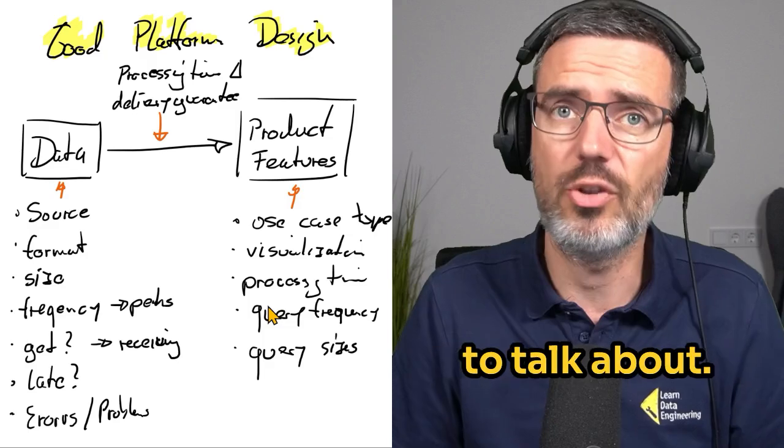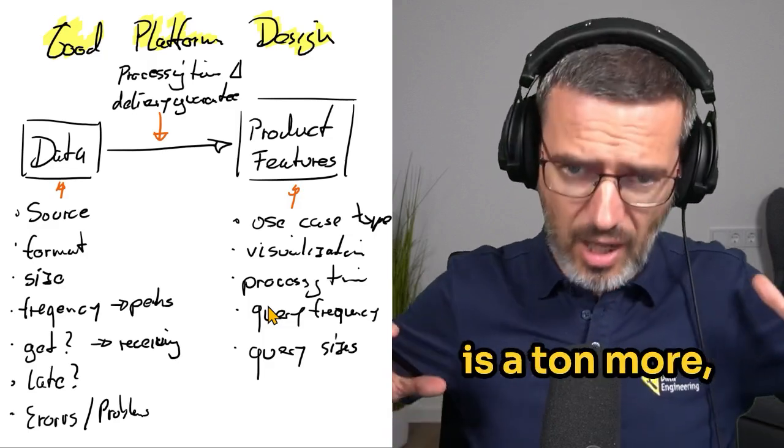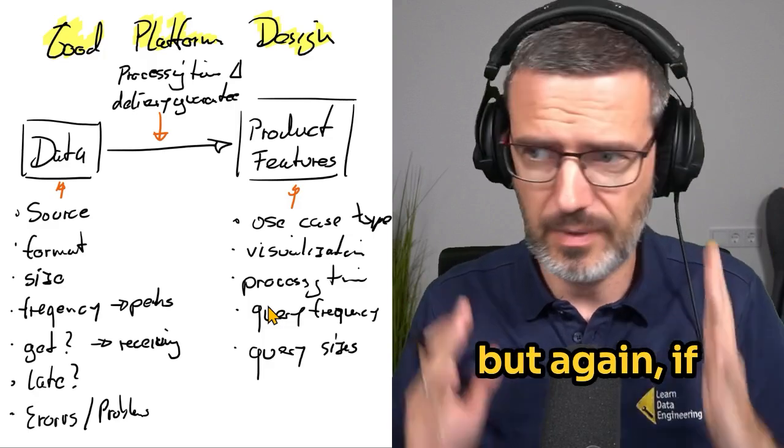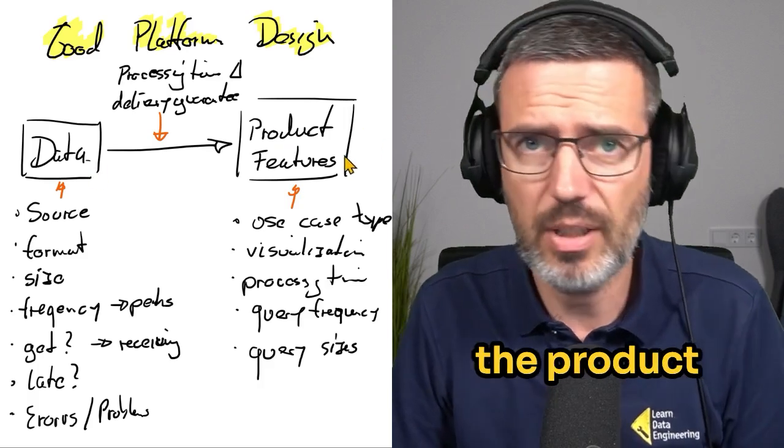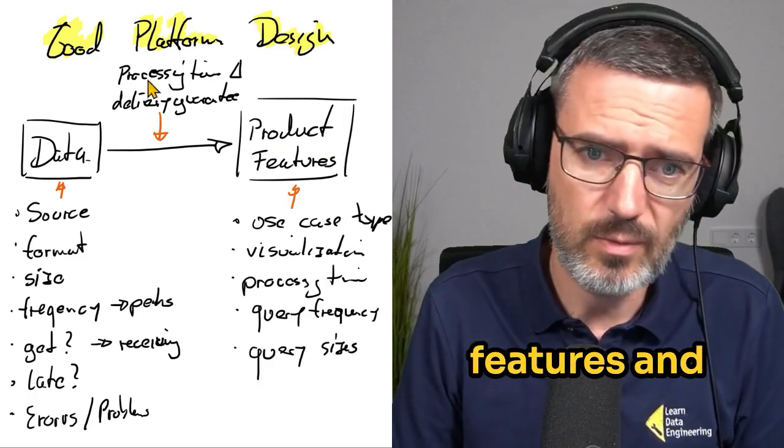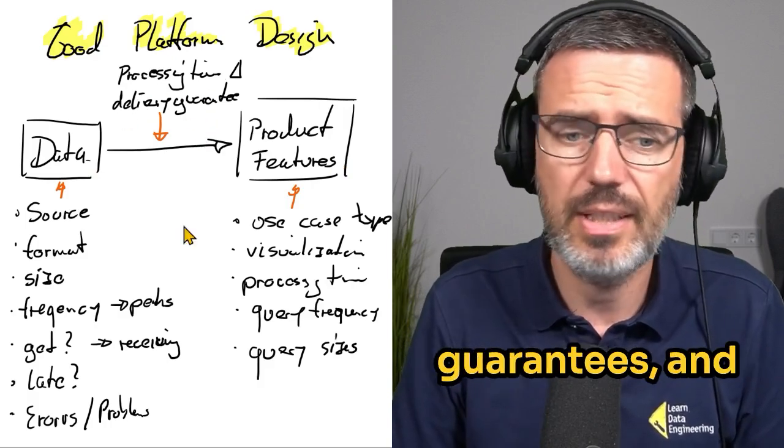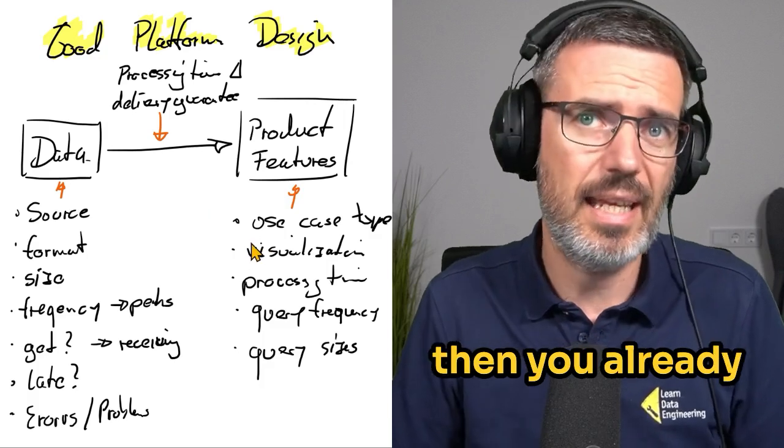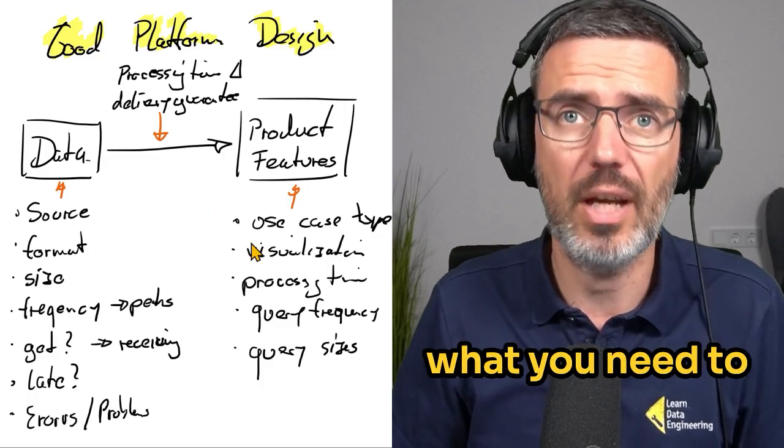So these are things you need to talk about. You need to ask. You need to find out. Of course, there is a ton more. But again, if you understand the data and if you understand the product features and processing time, delays, delivering guarantees and so on in between, then you already will get a good understanding of what you need to actually deliver.